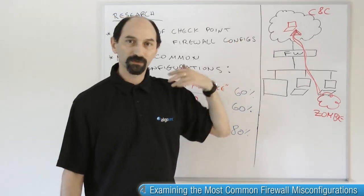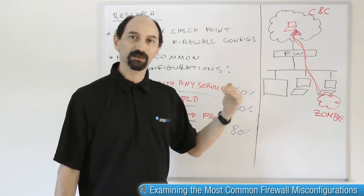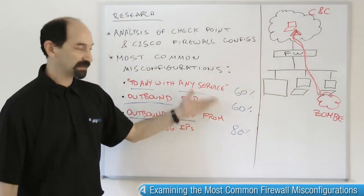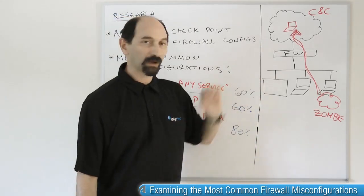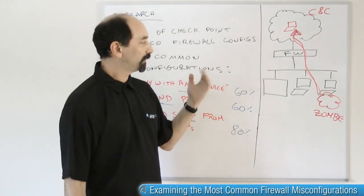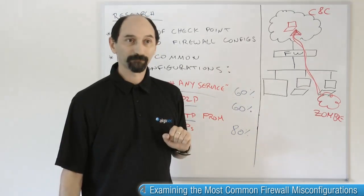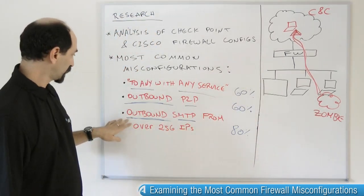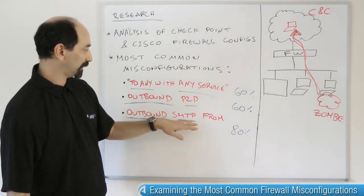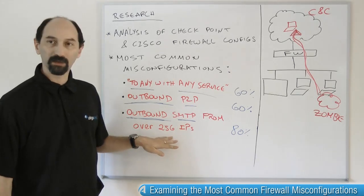So that's why these things are considered quite risky. Because of historical reasons, firewall administrators pay less attention to outbound traffic. So many firewalls — 60 to 80% of firewalls — are allowing this bad traffic outbound. It's our job as firewall administrators to limit that. Now let's take a closer look at the third misconfiguration, which is really the most common: SMTP being allowed from many, many different IP addresses.